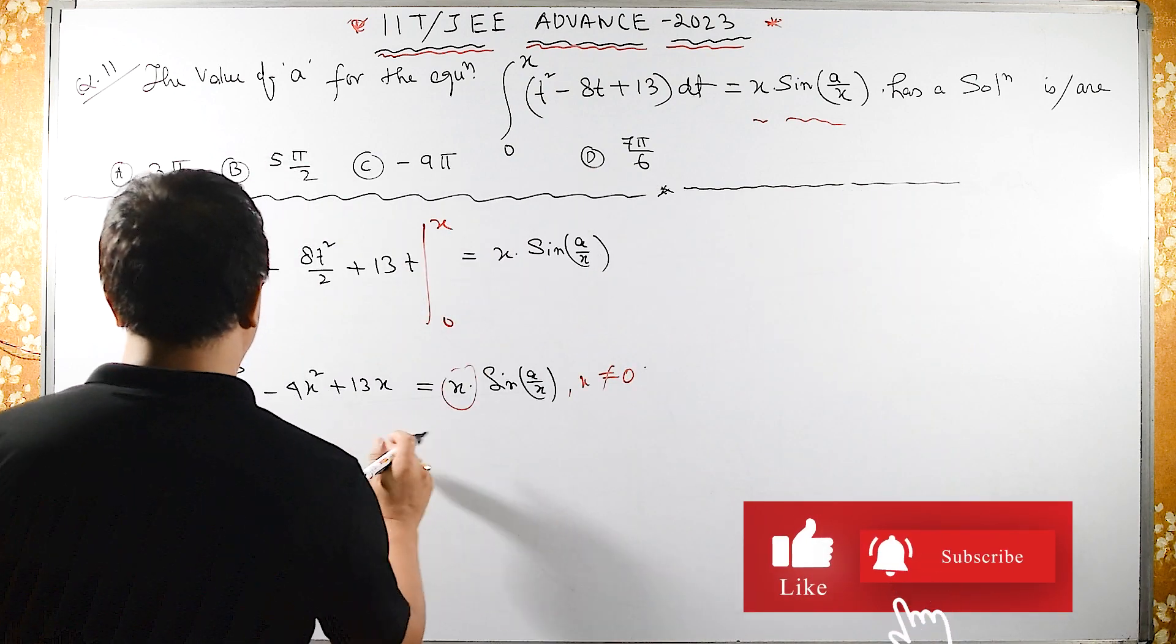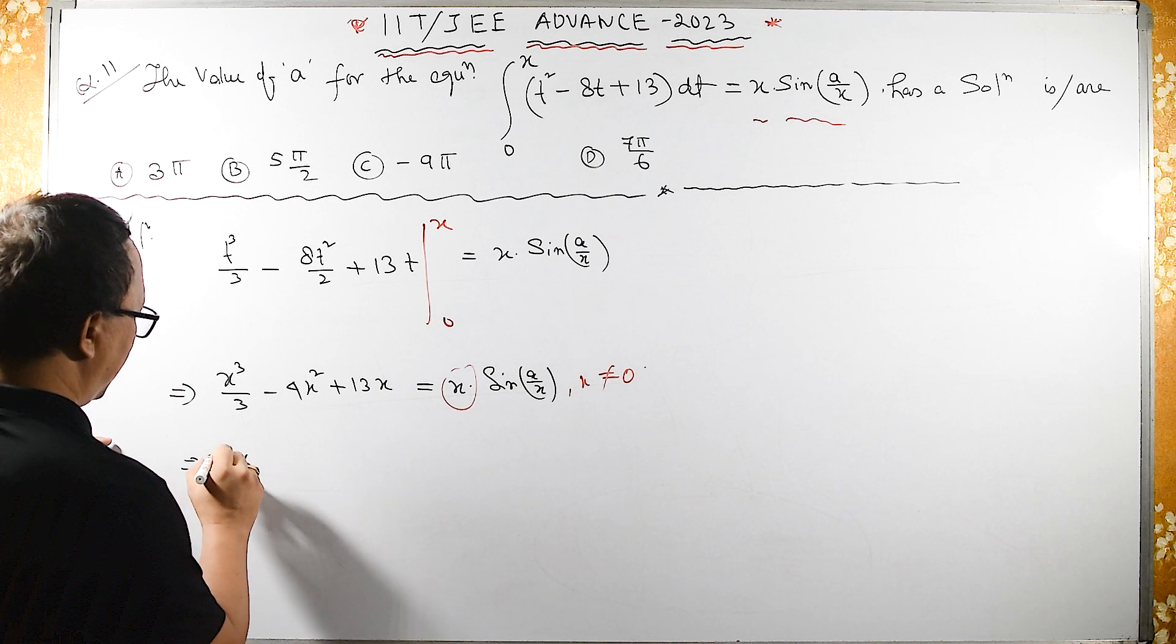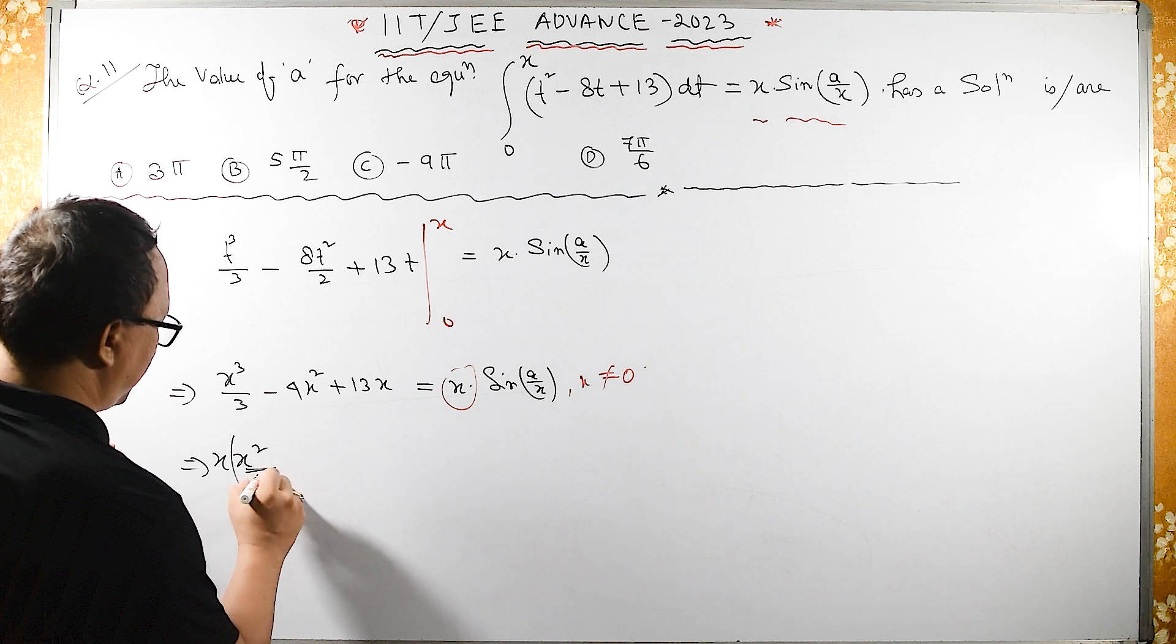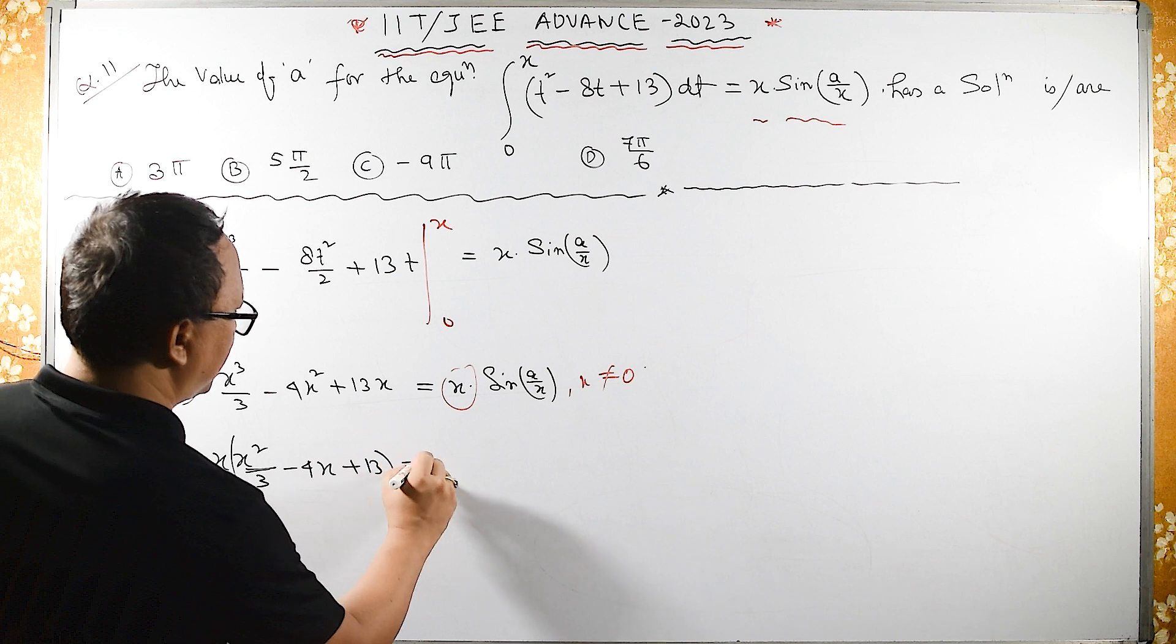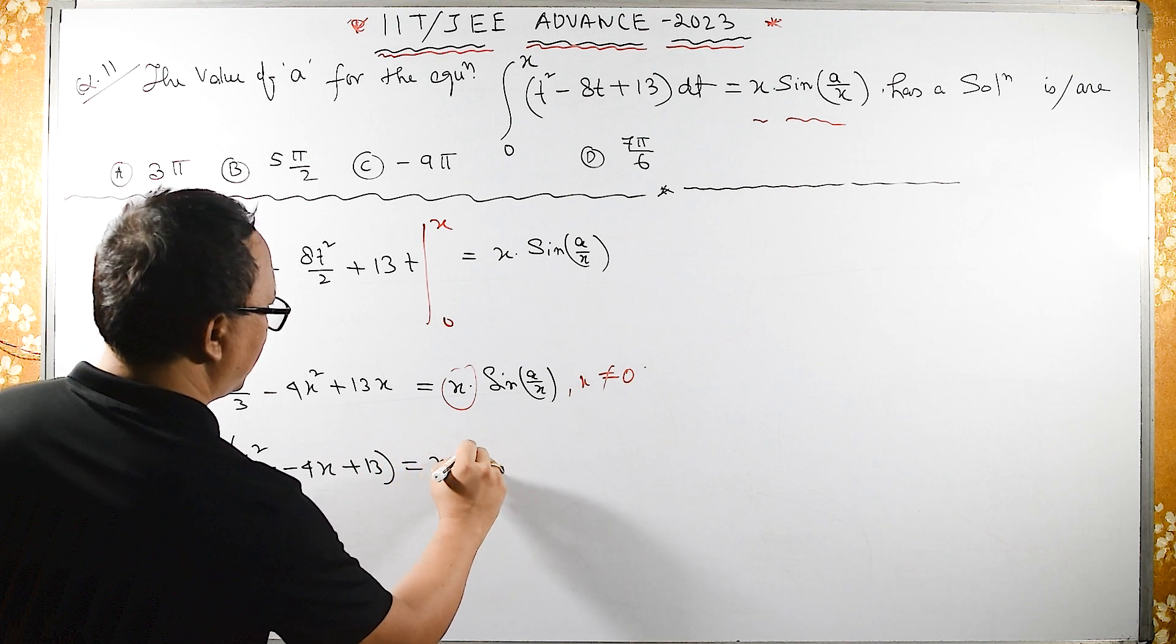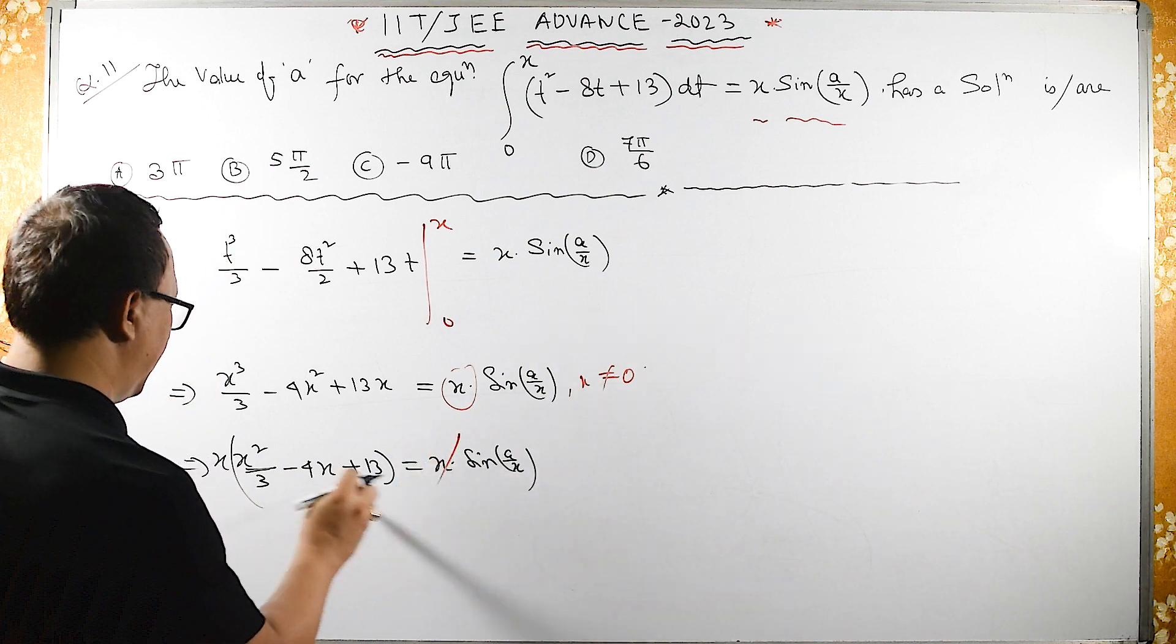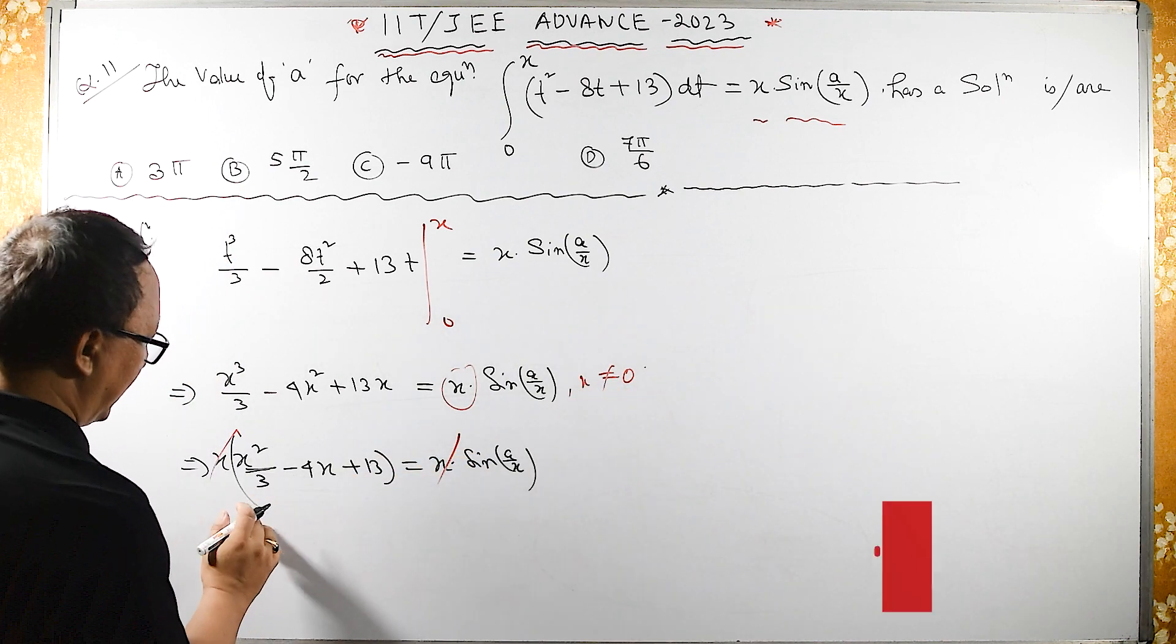If I take X common, X²/3 - 4X + 13 equals sin(A/X). This X and this X get cancelled since X is not equal to 0.